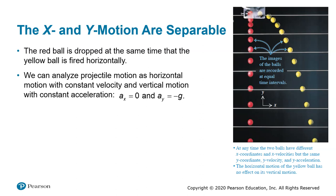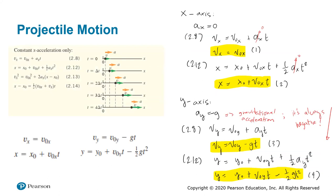Remember that from free fall, the acceleration is negative, so that applies here too. Going back to the kinematic equations for constant acceleration and substituting the x and y components: for motion along the x-axis, equation 2.8 reduces to vx equals v-naught-x, and 2.12 becomes x equals x-naught plus v-naught-x times t. While for motion along the y-axis, 2.8 becomes vy equals v-naught-y minus g times t.